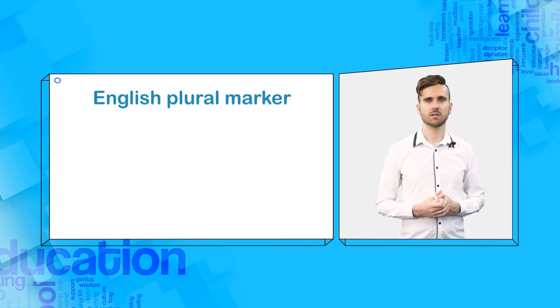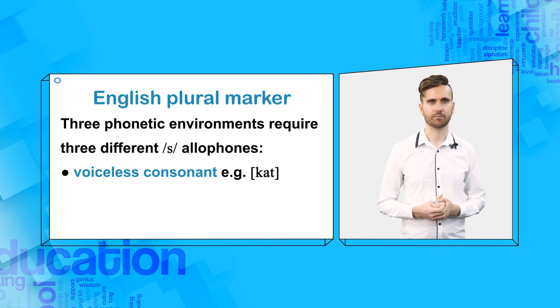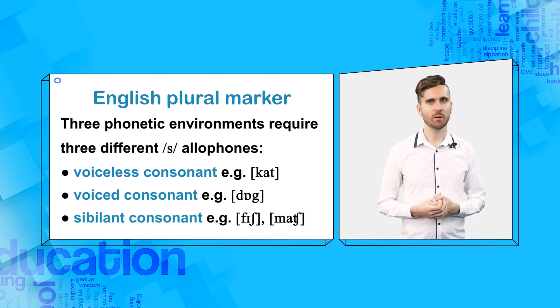The phonetic environment is the last sound of the noun that the plural marker is joined to. There are three phonetic environments, which require three different s allophones. The last sound of the noun could be a voiceless consonant. For example, cat. It could be a voiced consonant. For example, dog. Or it could be a sibilant consonant. For example, fish. Match.